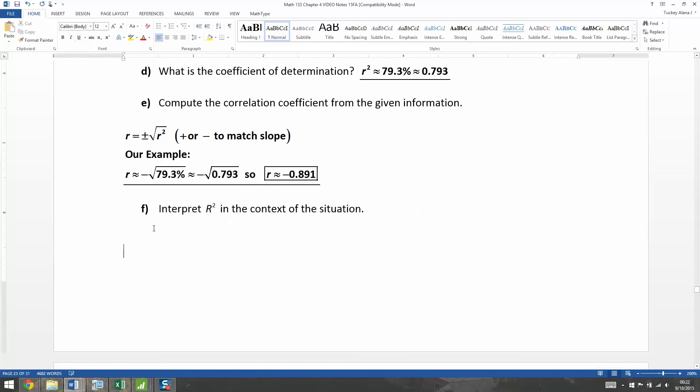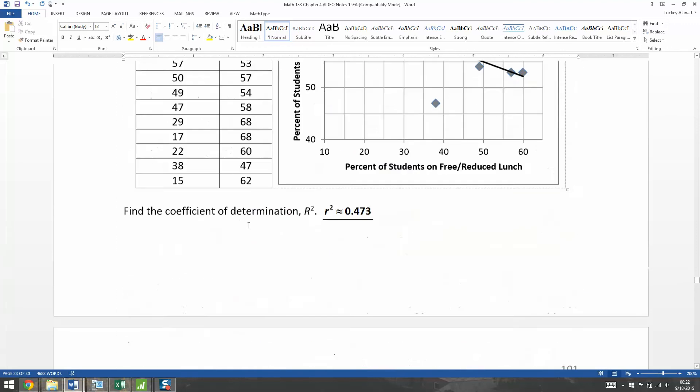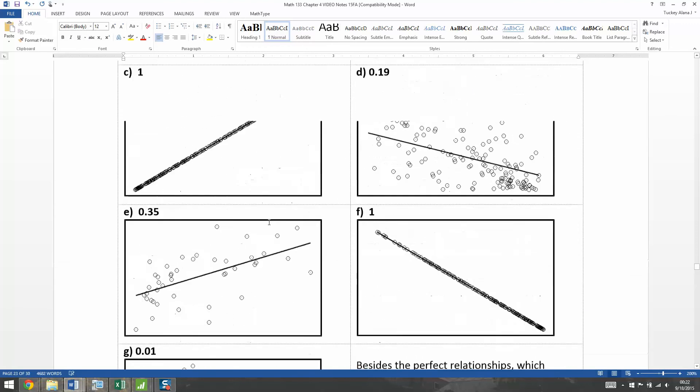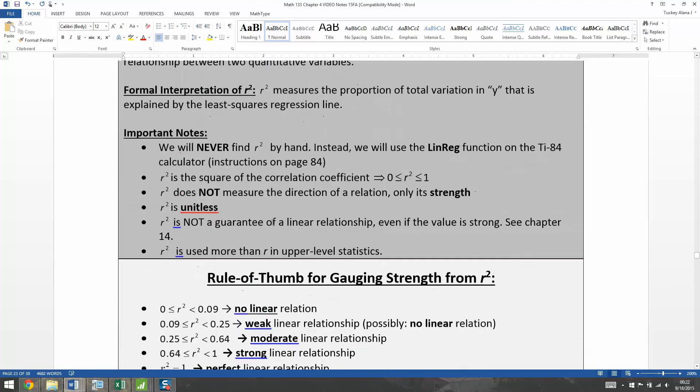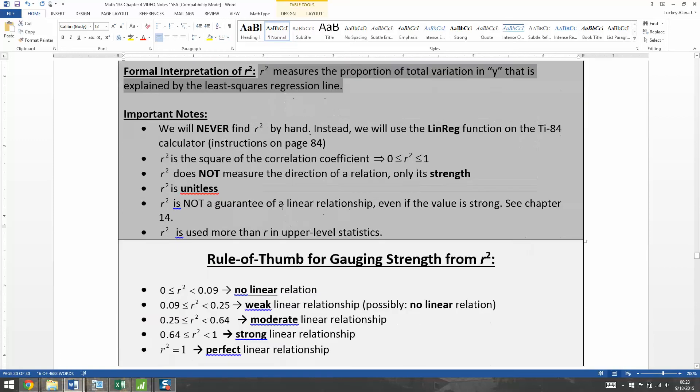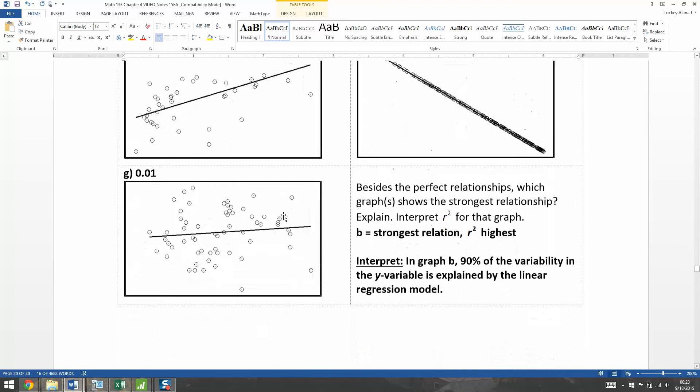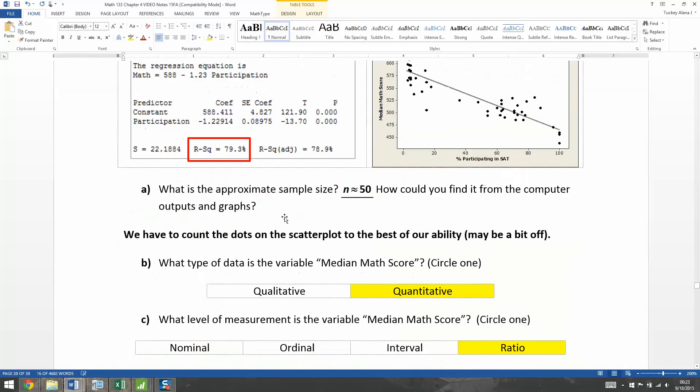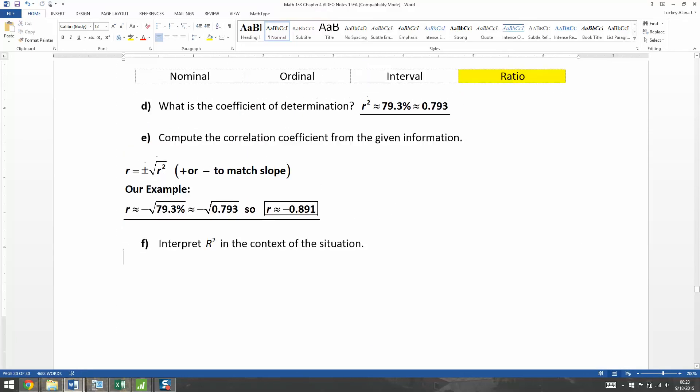All right. We have calculated the correlation coefficient. Now we need to interpret the R-squared in the context of the situation. Well, that gets back to the whole percentage of the variability can be explained by blah, blah, blah. So that's the formal interpretation of R-squared. So R-squared measures the proportion of total variation in Y that is explained by the least squares regression line. So that's what we're going to use for our interpretation down here. So let me type that up one second.